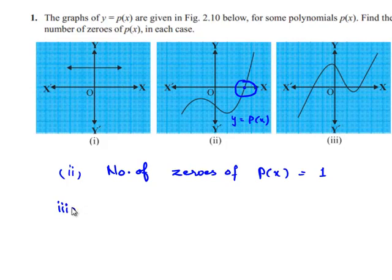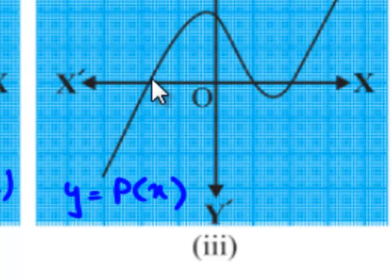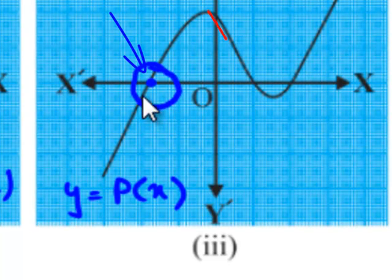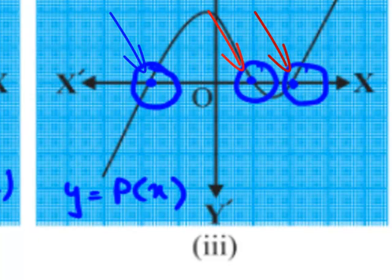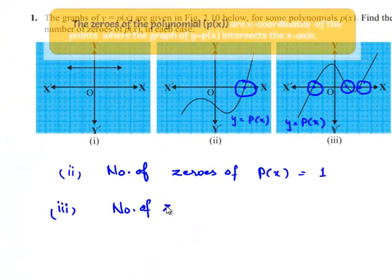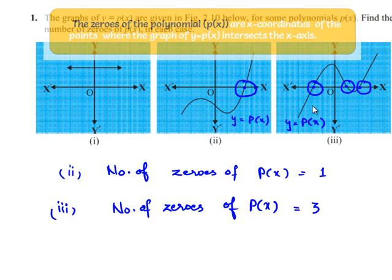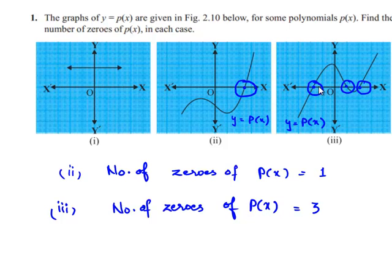Coming to the third graph, the graph y is equal to p of x is intersecting the x-axis at three points — this is one point, this is one, and this is another. So by definition, we can say that the number of zeros of p of x is equal to three, since the graph is intersecting the x-axis at three points.